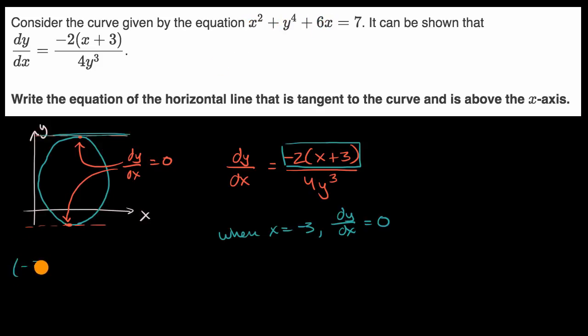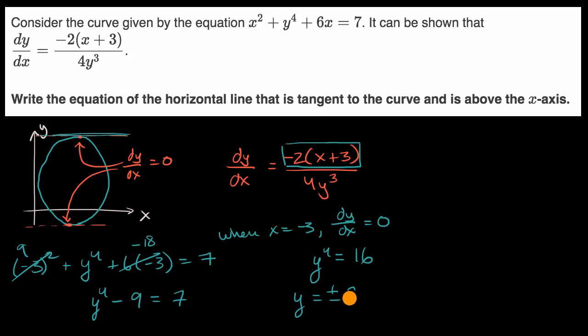So it's going to be negative three squared plus y to the fourth plus six times negative three is equal to seven. This is nine. This is negative 18. And so we're going to get y to the fourth minus nine is equal to seven. Or adding nine to both sides, we get y to the fourth power is equal to 16. And this would tell us that y is going to be equal to plus or minus two.